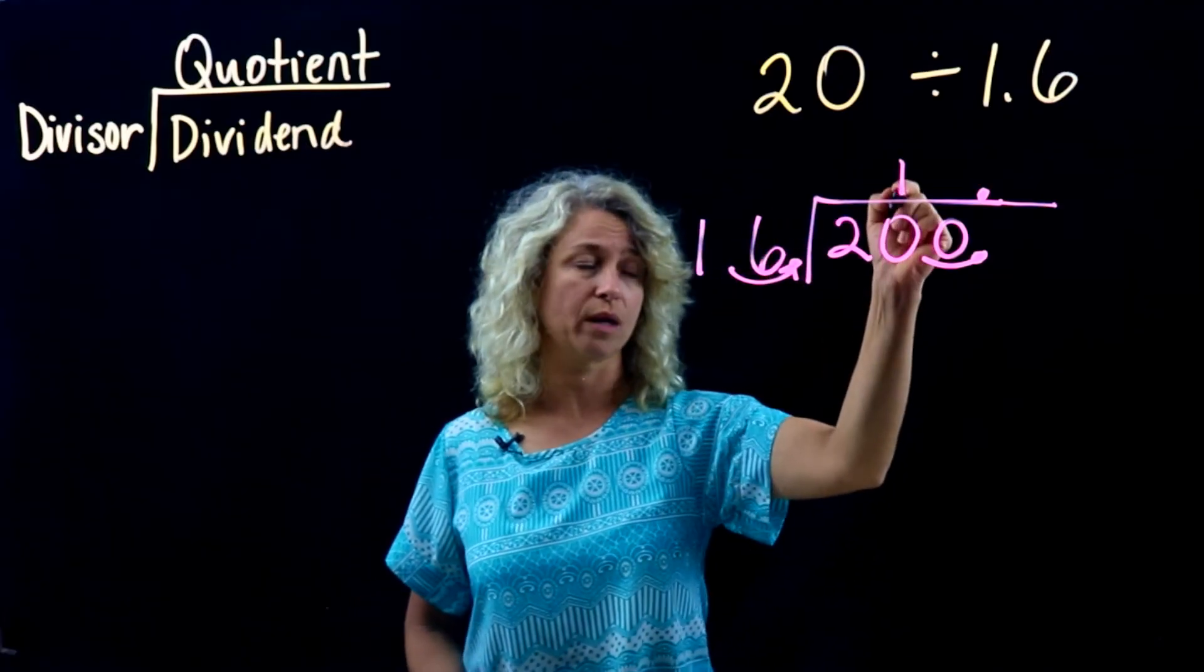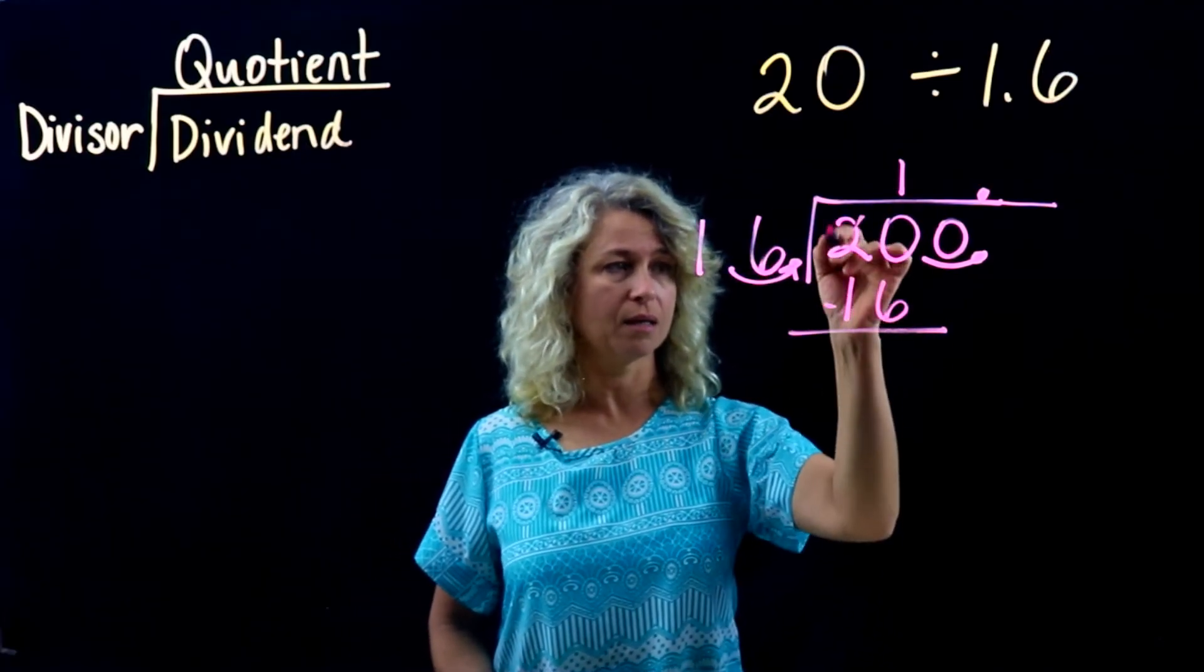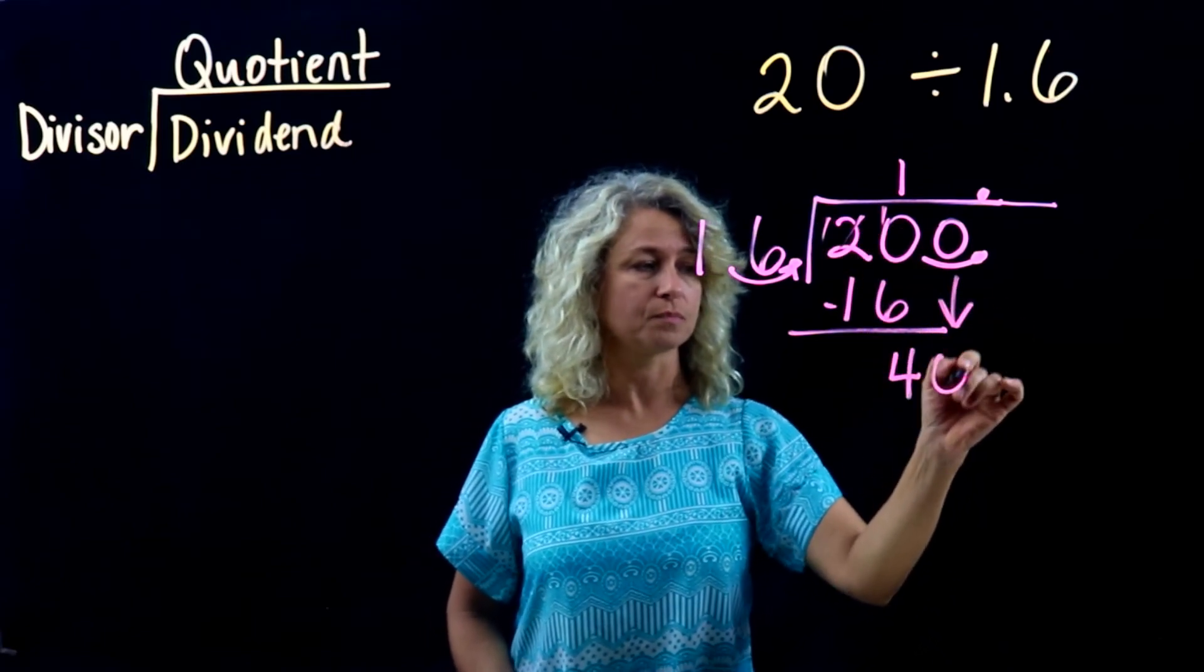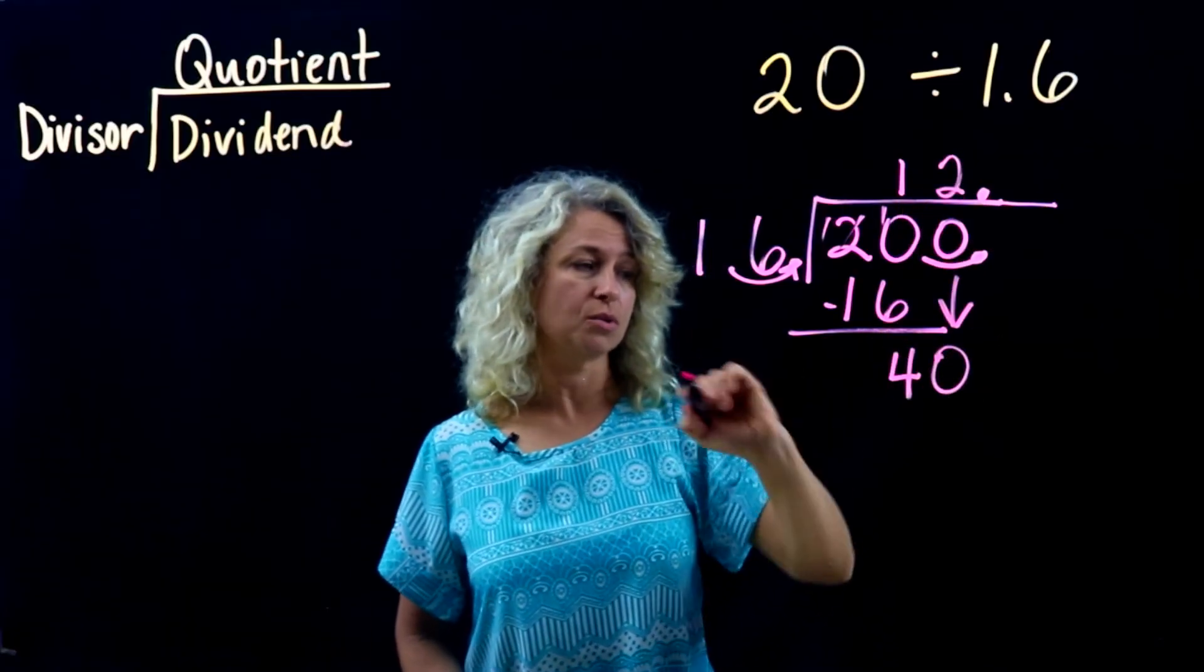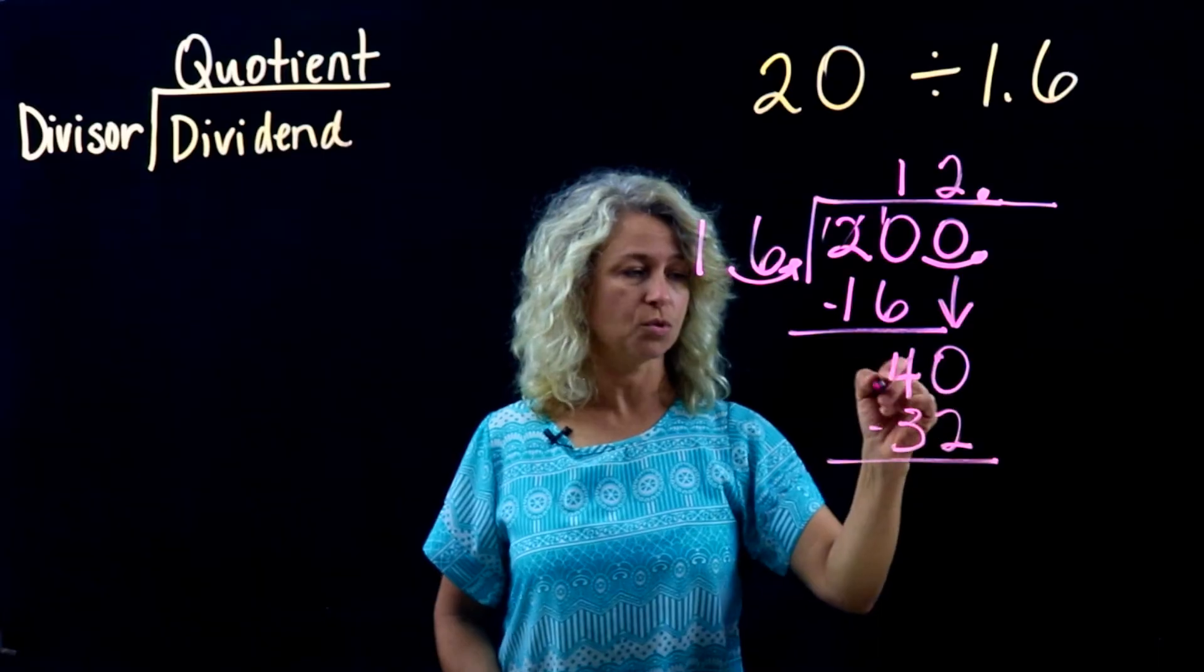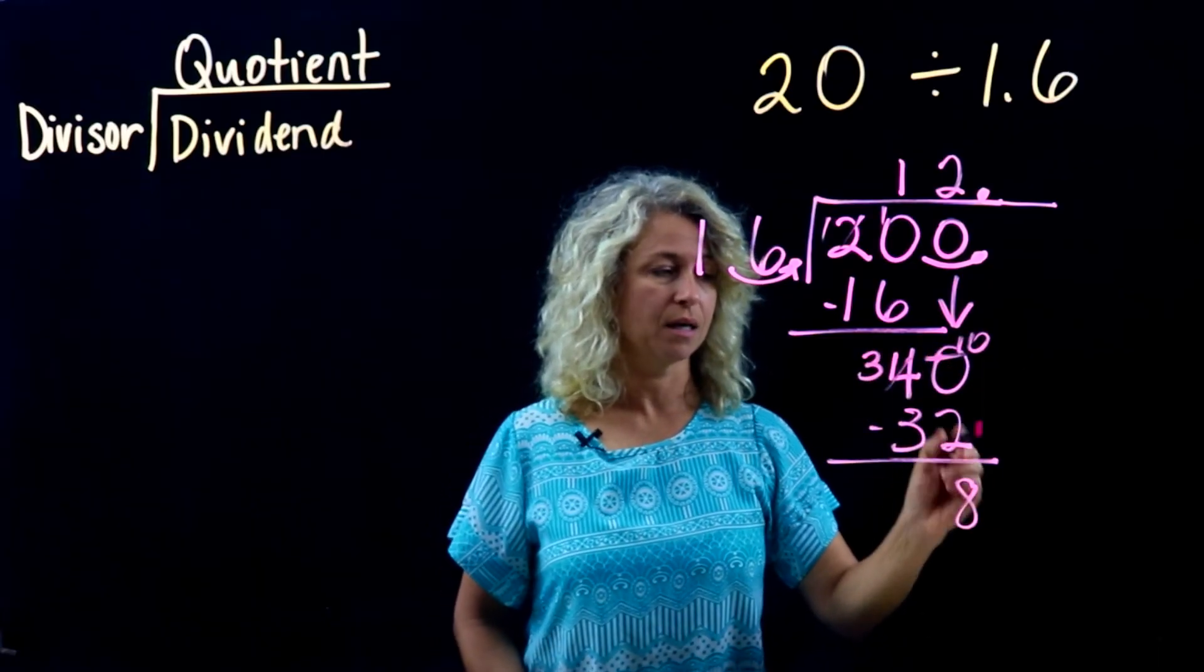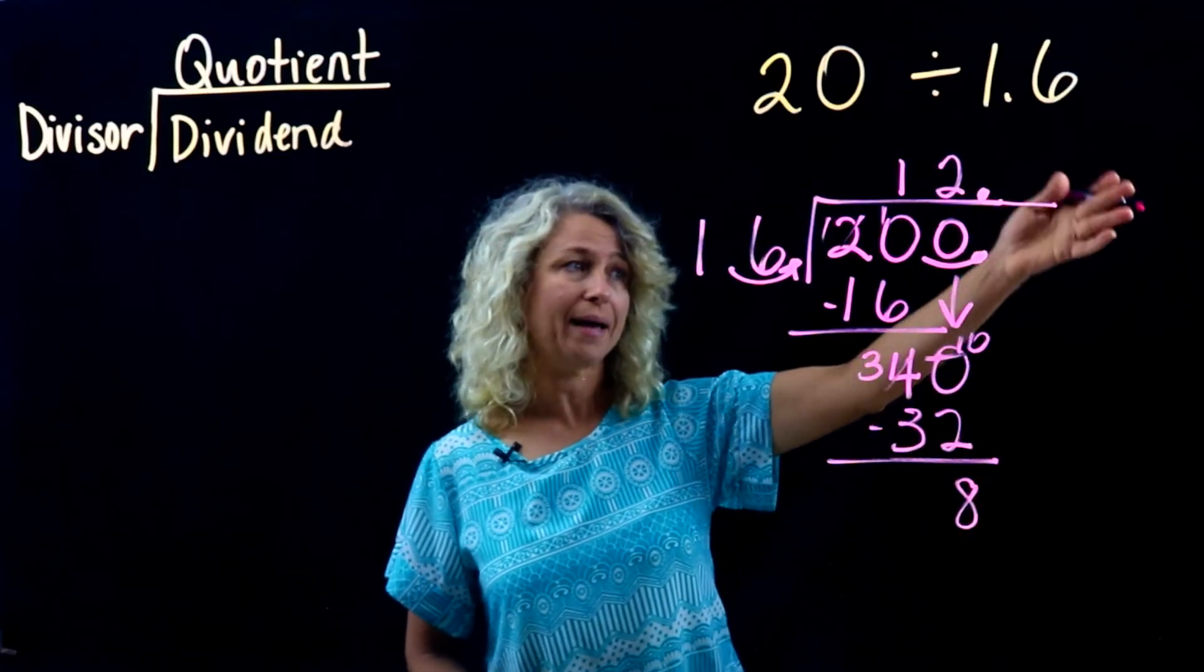Now just divide. Sixteen goes into twenty one time, subtract and get four. Bring down your next number. Sixteen goes into forty two times. Two times sixteen is thirty-two, subtract and get eight. Now in the past we wrote this as our remainder, remainder eight.